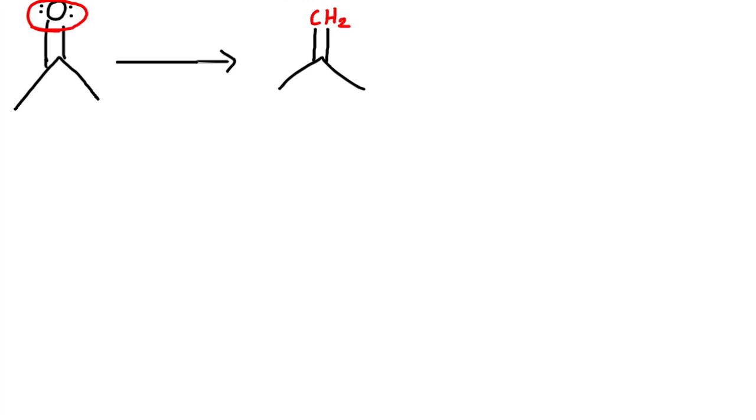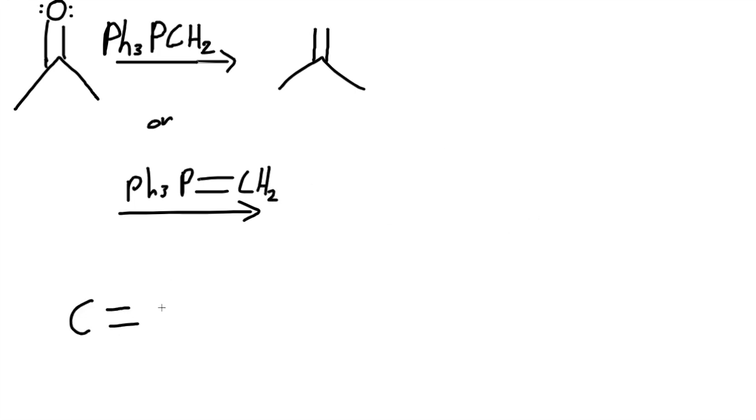So in this case, we would use PPH3, triphenylphosphine. So pH3P, and then we use CH2. Or you can write it like this, pH3P, double bond, CH2. So always remember, there will always be a double bond between the phosphorus and then the CH2. They're all the same thing.